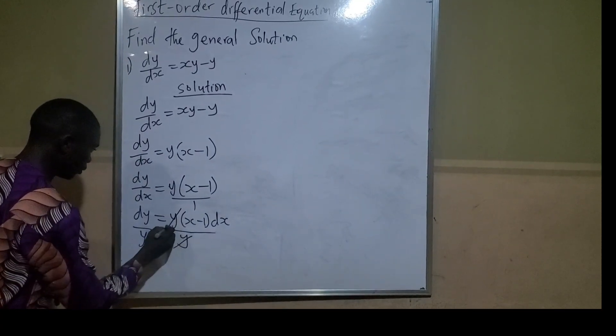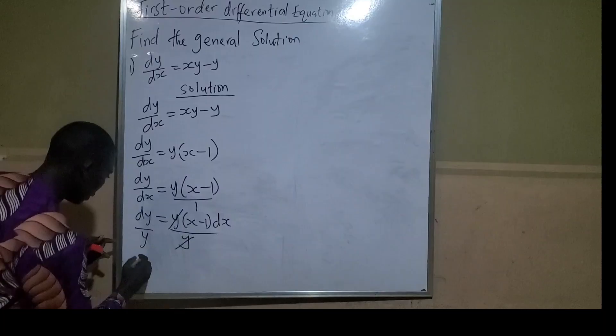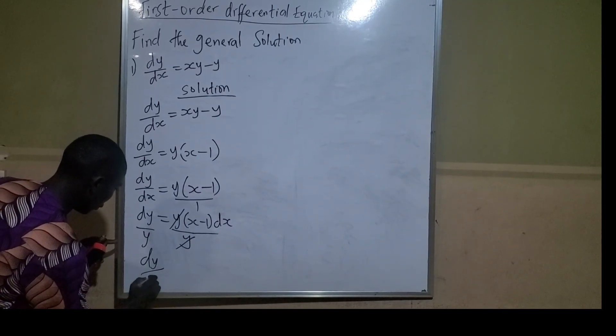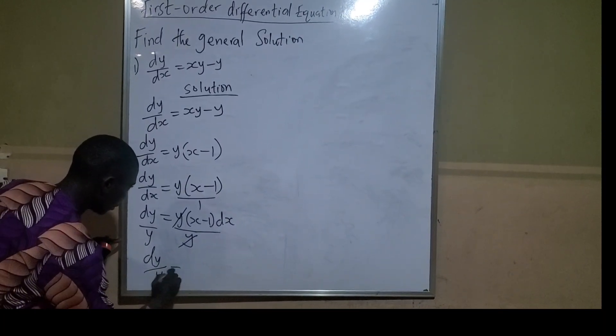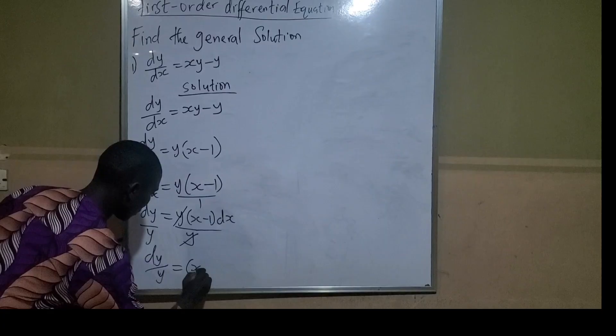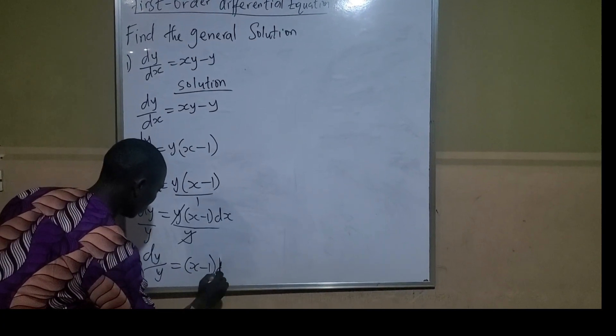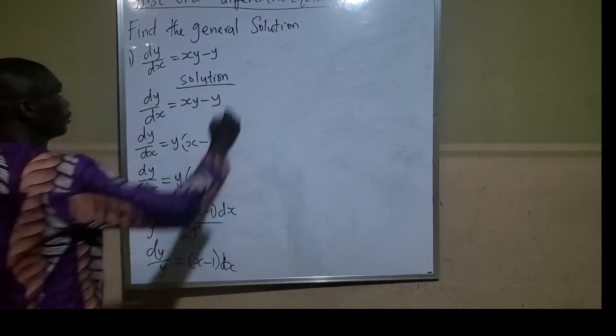So this will cancel, and I will have dy/y equals (x - 1)dx.